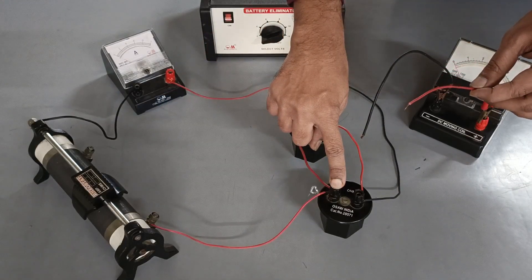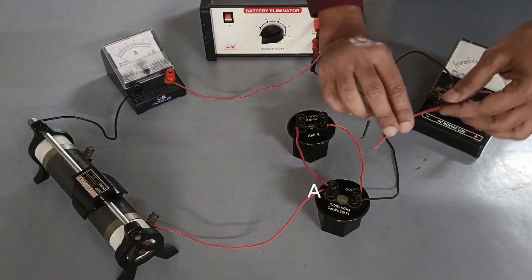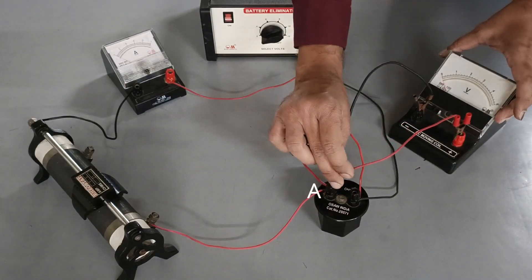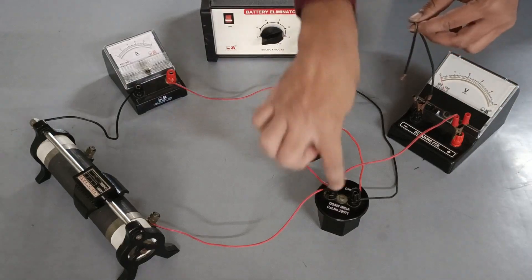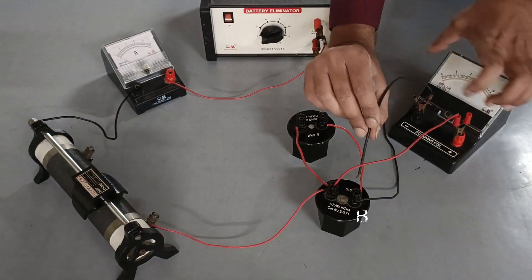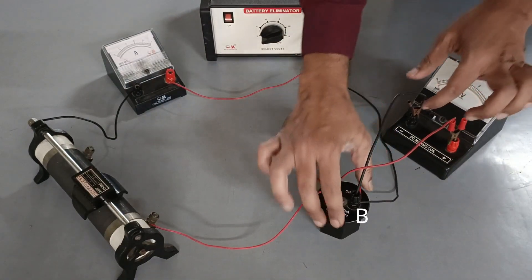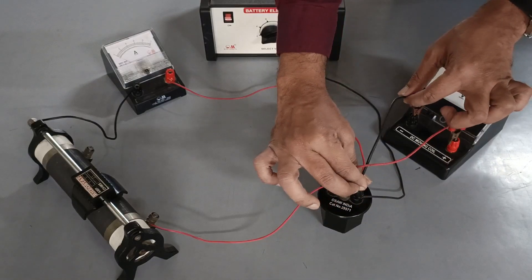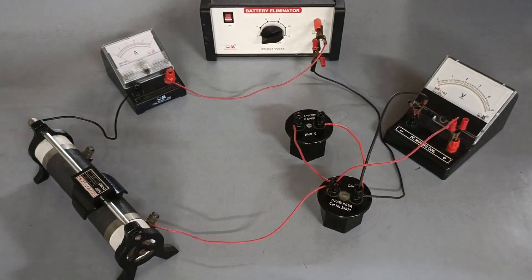Connect positive red terminal of the voltmeter to end A of the resistor through which the current enters the resistor. And connect the negative black terminal of the voltmeter to the end B of the resistor through which the current leaves the resistor.